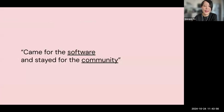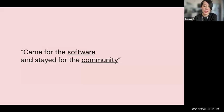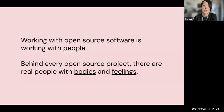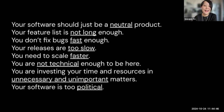Working with open source software is always working with people. Behind every open source project, there are people with real feelings and bodies. One quote I really like from the OSPO symposium and previous community talks is: 'We came for the software and stayed for the community.' Working in the open source space means we think about digital software, but in the end — especially in the community part — we spend a lot of time working with people. That's what brings me to the second part of this talk: what kind of community work I've been doing as a P5 lead.